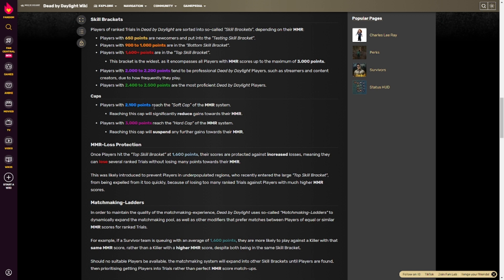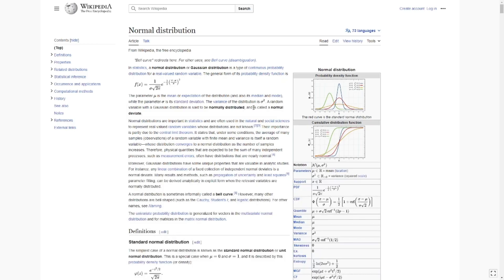And at 2,100, you get significantly reduced gains towards MMR. So you can still increase in MMR, however it's very very difficult. So what does this mean? Well, Dead by Daylight, as with any other game, as with many many other things in life, can be modeled using the normal distribution. In stats, a normal distribution or Gaussian distribution is a type of continuous probability distribution for a real valued random variable. The general form of its probability density function is f of x equals something something something. This isn't important to understand what the function does. What's important is that these two parameters, you have mu and sigma. Mu is the mean or the average, and then sigma is one standard deviation.